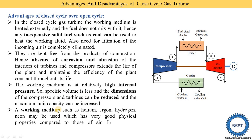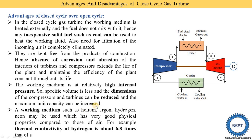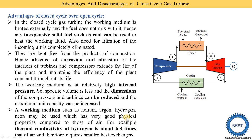The next advantage is that the working medium can be substances such as helium, argon, hydrogen, or neon, which have very good physical properties compared to air. Depending on the size of the plant, we can use working fluids other than air. For example, the thermal conductivity of hydrogen is about 6.8 times that of air, and therefore requires smaller heat exchangers.